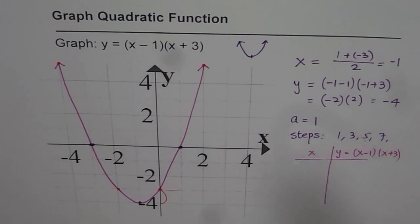But I will prefer this method. Locate x-intercepts, then the vertex, and then follow the steps, which is 1, 3, 5, 7 in this case, to sketch a smooth parabola representing the quadratic function. I hope that helps. Thank you and all the best.